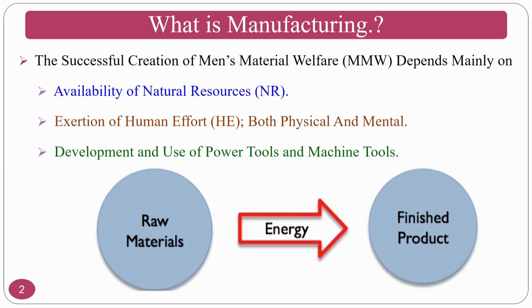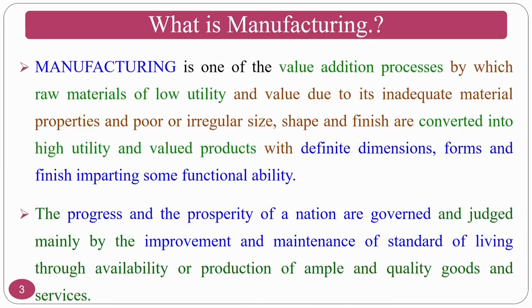The successful creation of material welfare depends mainly on availability of natural resources, exhaustion of human efforts both physical and mental, and the development and use of power tools and machine tools. Manufacturing can be defined in many ways. Some people call it production engineering. Manufacturing and production are synonyms — some textbooks follow production, some follow manufacturing; however, both are the same.